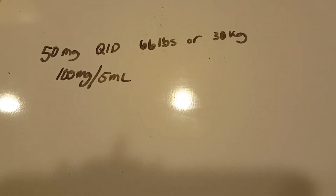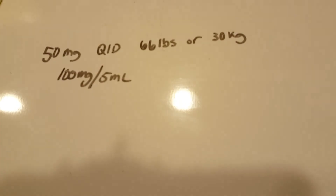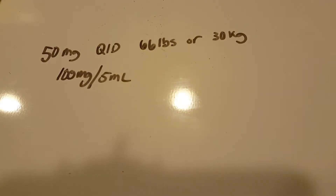The label for the medication is 100 milligrams per 5 ml. The question is: 50 milligrams of suspension four times a day — how many milliliters would you give? And that's also the dosage range for a 6 to 12-year-old. So the question is, is this a safe dose, why or why not, and what is your action?